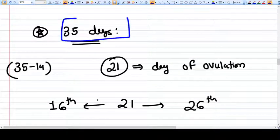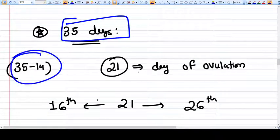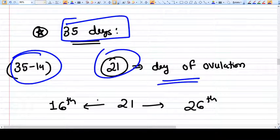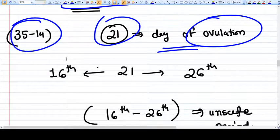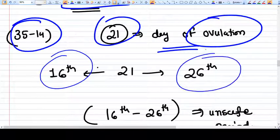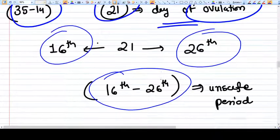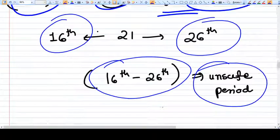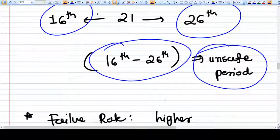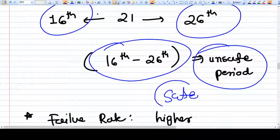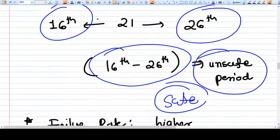The rest of the days are considered as safe. Suppose the cycle is of 35 days, then 35 minus 14, the 21st day comes as ovulation day, then 16th to 26th. This period, 16 to 26, is considered as unsafe period. Rest of the cycle days are considered as safe.